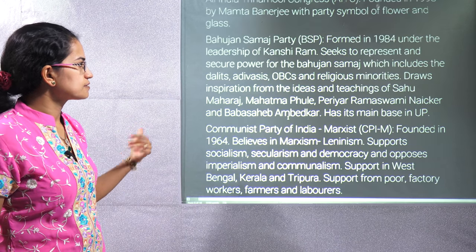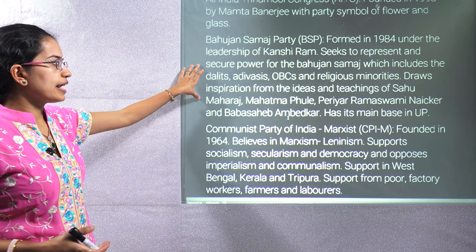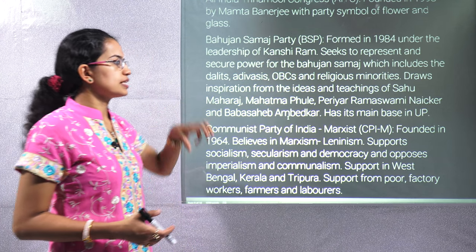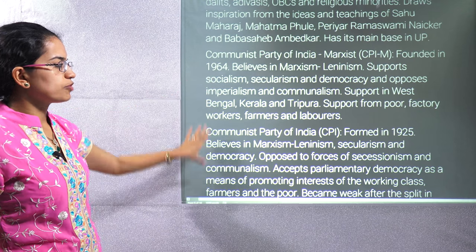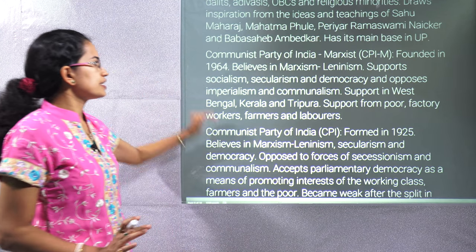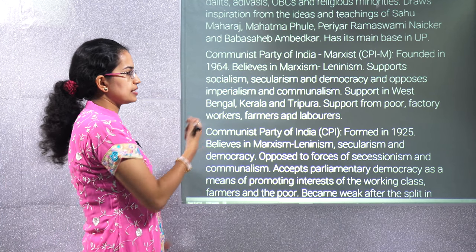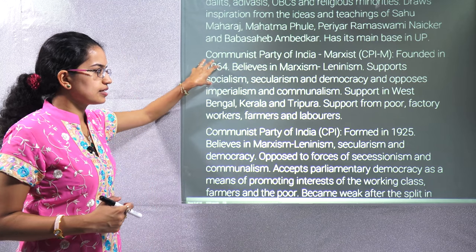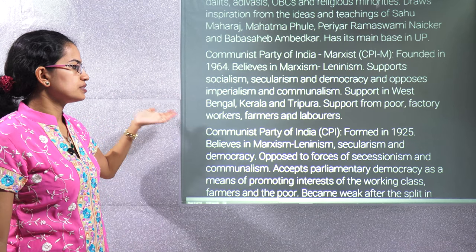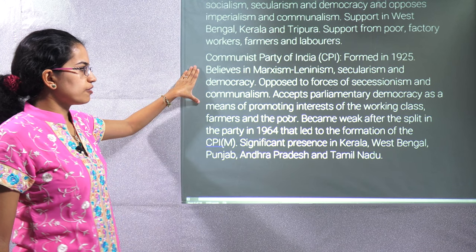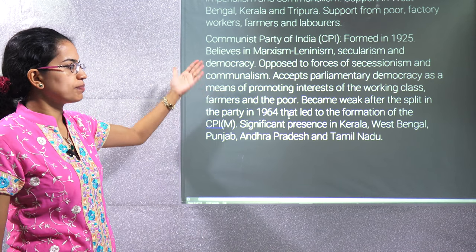The All India Trinamool Congress was founded very recently in 1998 by Mamata Banerjee, with the party symbol of flower and grass. The Bahujan Samaj Party was formed by Kanshi Ram in 1984 to help the Bahujan Samaj — Dalits, Adivasis, OBCs, and religious minorities. CPI(M) separated from CPI; CPI was founded in 1925, and CPI(M) was formed in 1964, believing in Marxist-Leninist philosophy — socialism, secularism, and democracy — mainly active in West Bengal, Kerala, and Tripura.